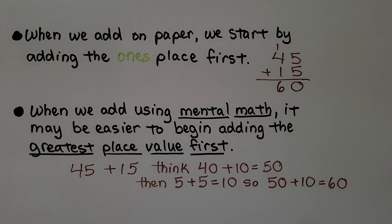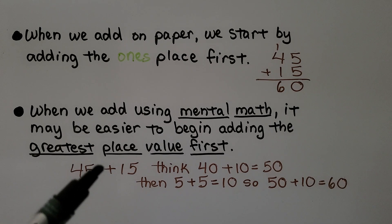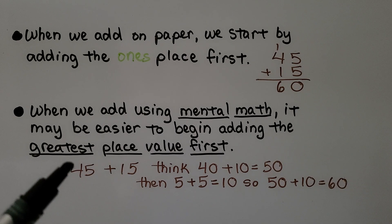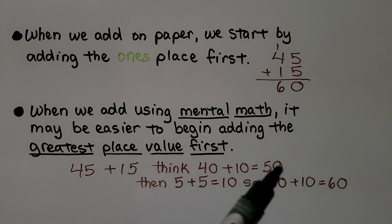When we add using mental math, it may be easier to begin adding the greatest place value first. To add 45 plus 15, we think 40 plus 10 is equal to 50.